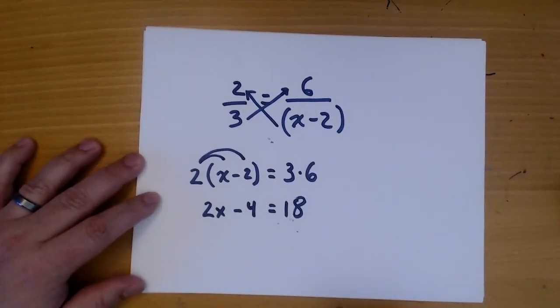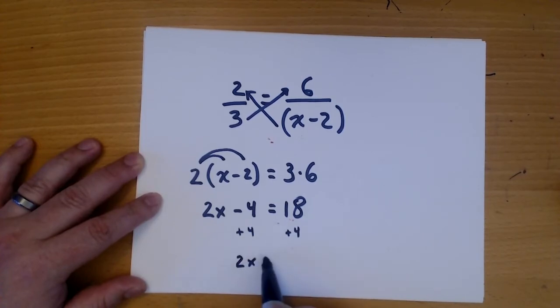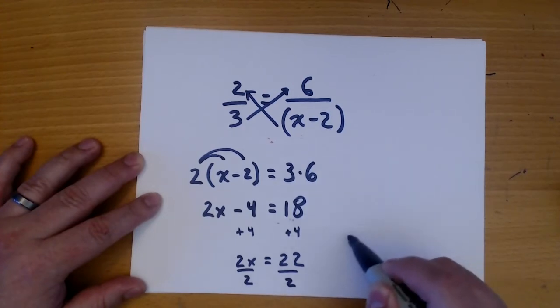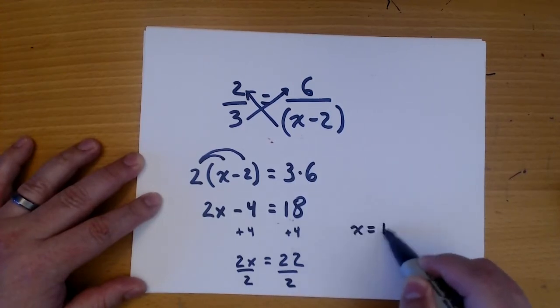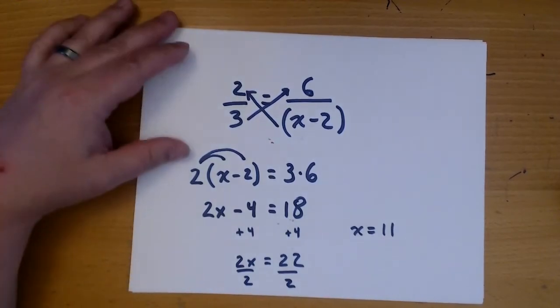Now we solve for x. So we add 4 to both sides. And now we divide both sides by 2. And x is equal to 11. All right, let's try that one more time.